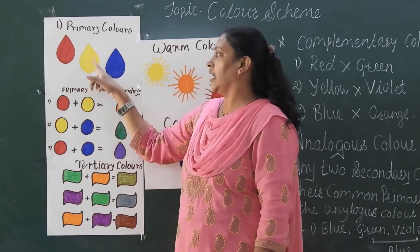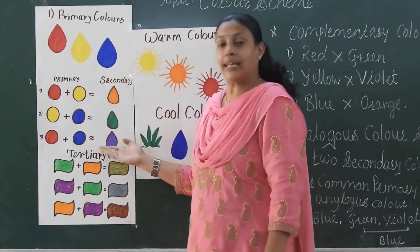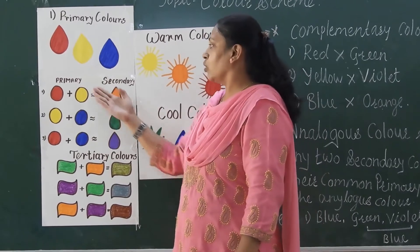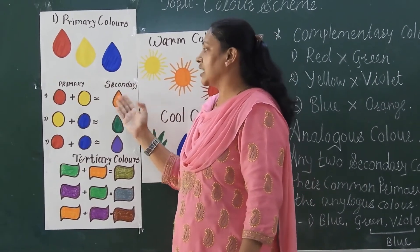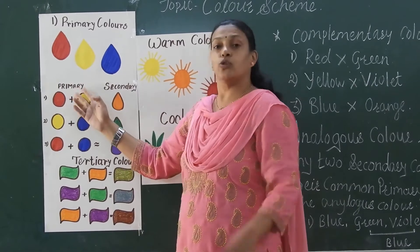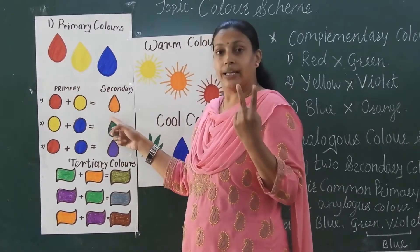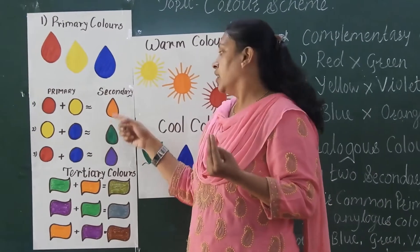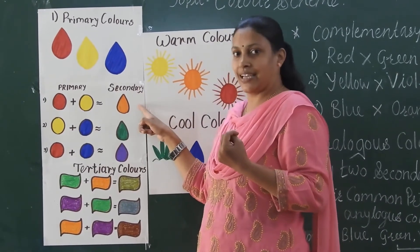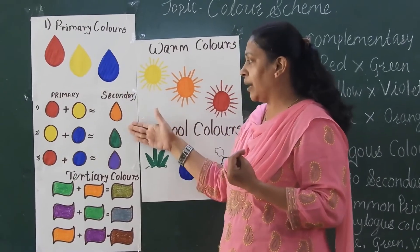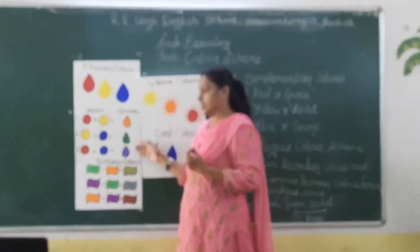When we mix these primary colors together, we get a new color scheme — we call them secondary colors. For secondary colors, we mix two primary colors together in equal quantity, and we get a secondary shade. The secondary colors are orange, green, and violet.